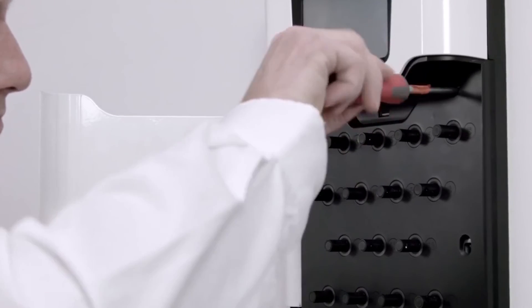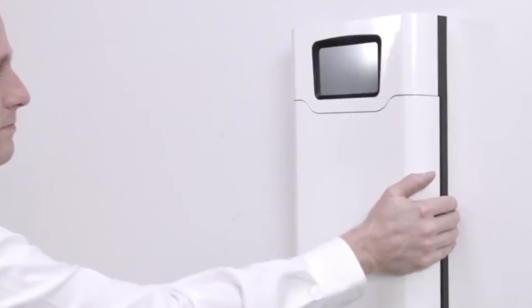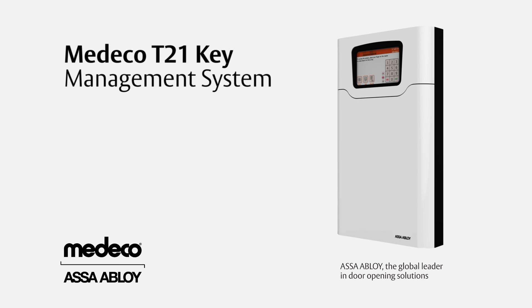Secure the unit onto the wall and cover the fixing points with the plugs provided. Then close the door, plug the system into the nearest power outlet and switch it on. It's as simple as that.